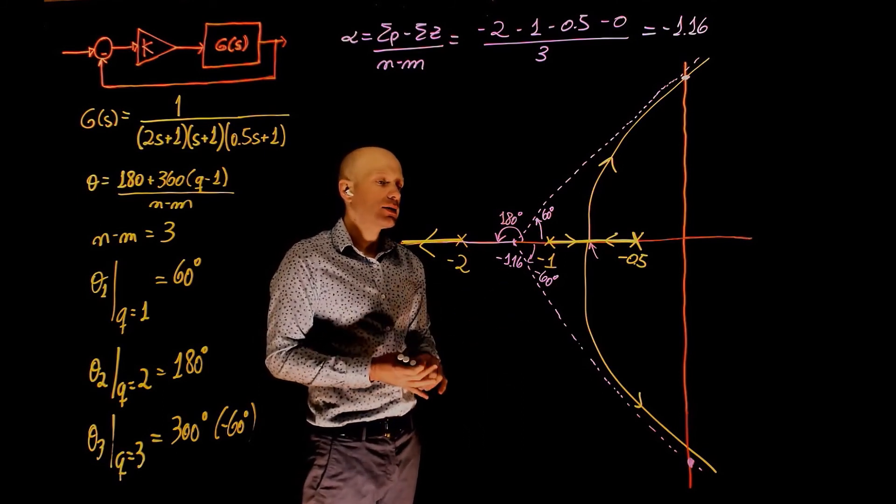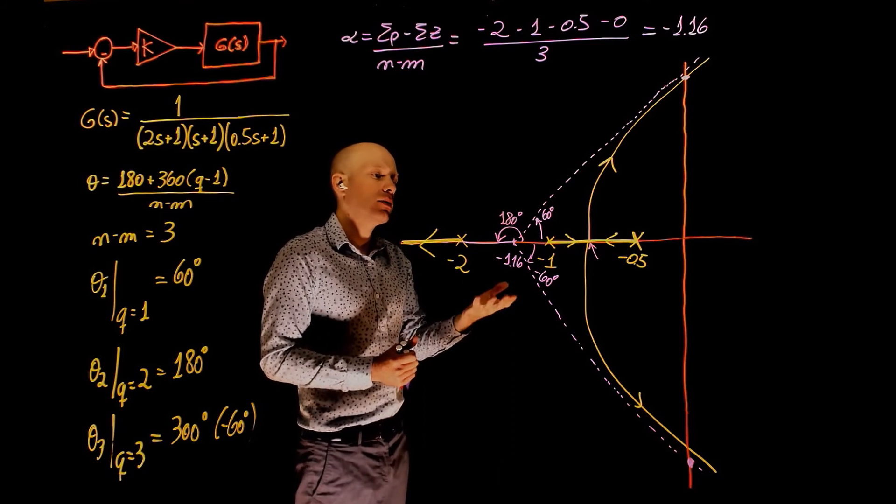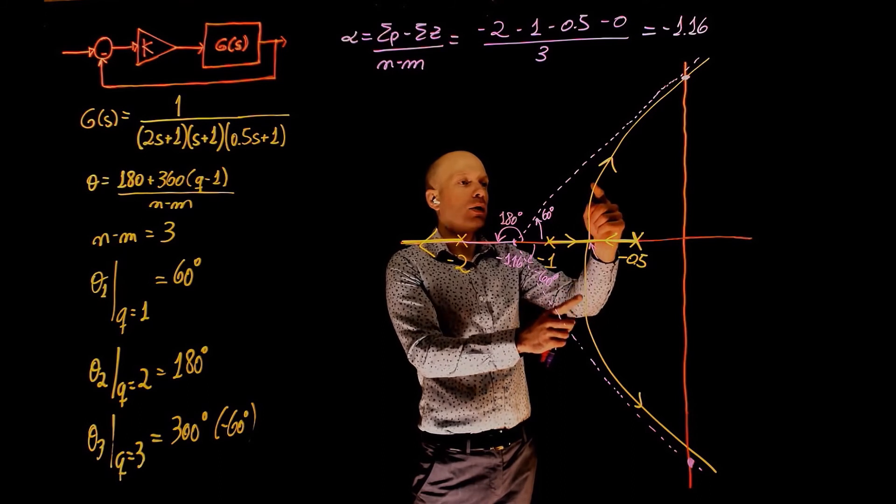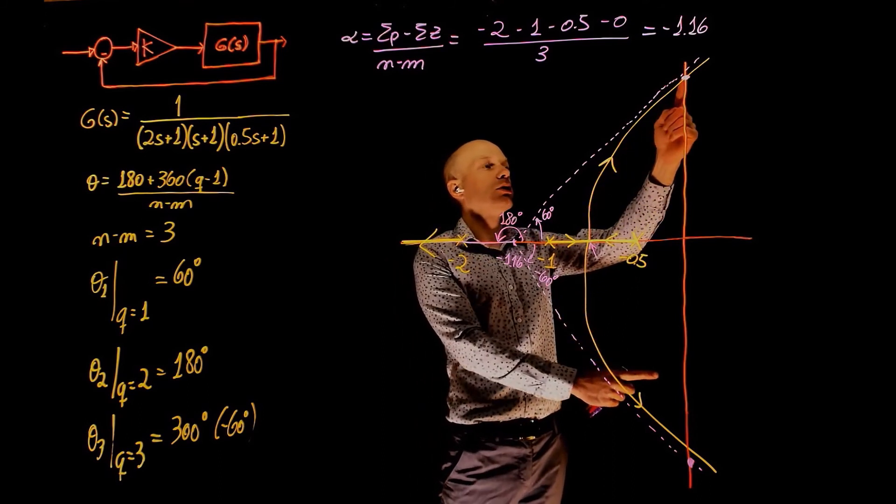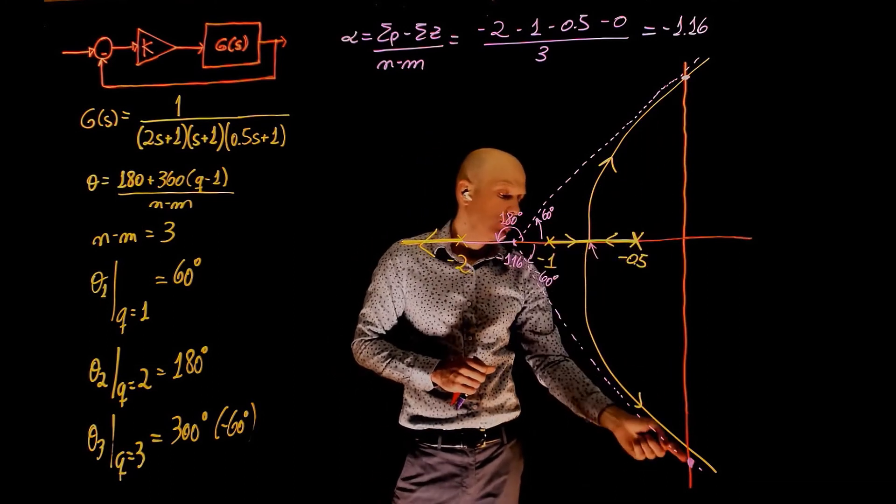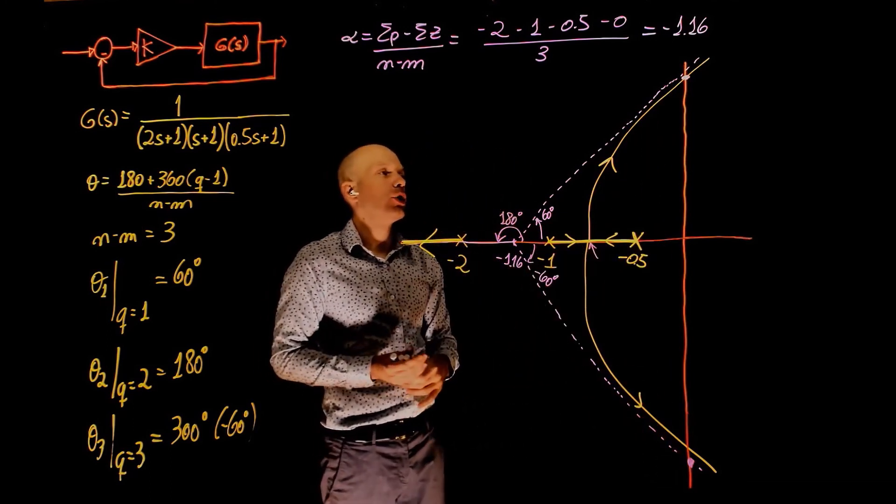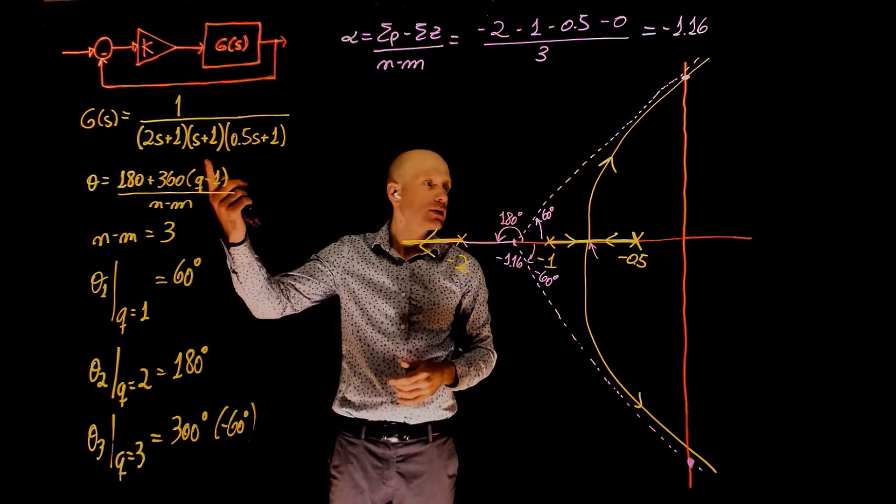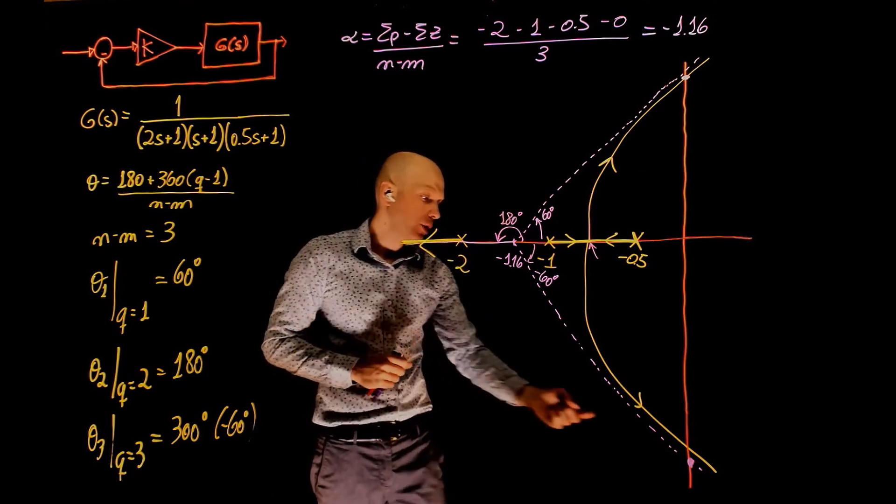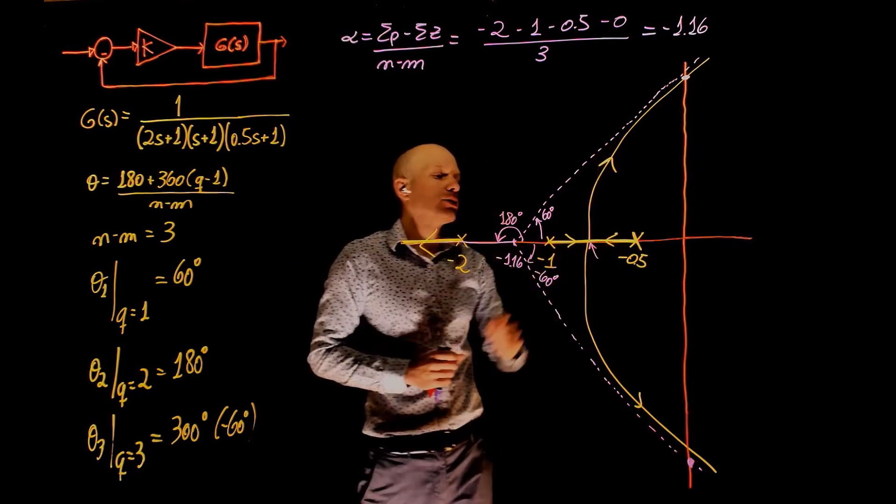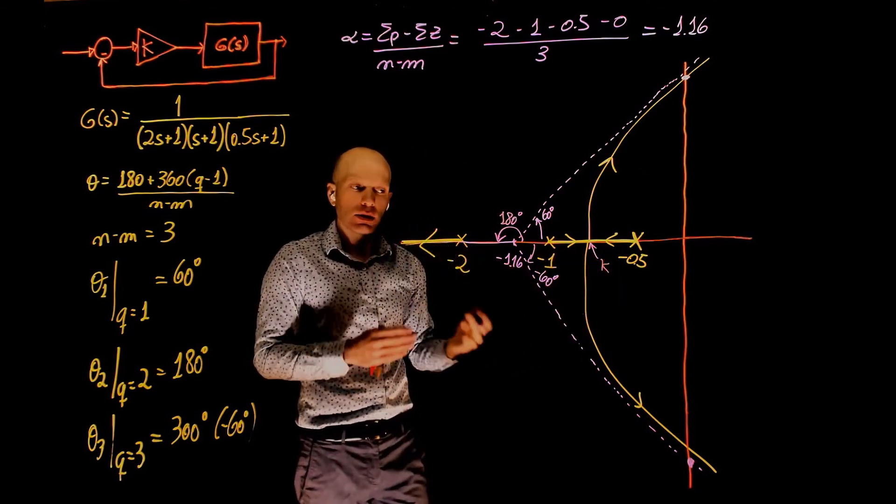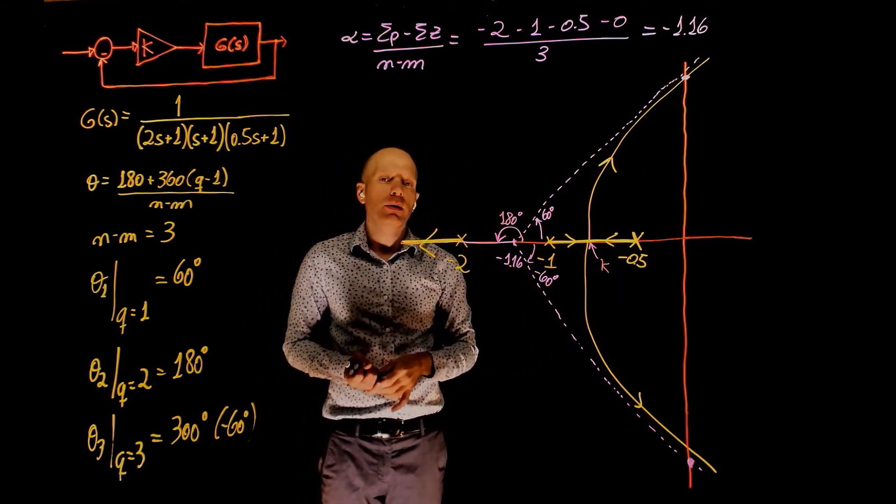So this root locus tells us that as we increase the gain, the system that was overdamped becomes underdamped with more and more oscillations until it becomes unstable. How do we determine the gains at these two points? Well, we can use the Routh-Hurwitz instability criterion to see what the maximum gain is. And that maximum gain that leads to instability will bring the poles to these two points. What is the gain that will make the system critically damped here? This is also something you're going to cover in the upcoming lecture.